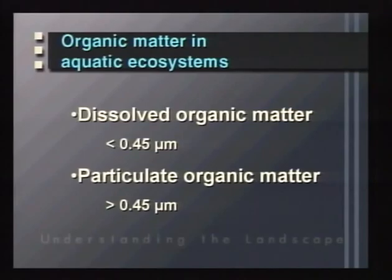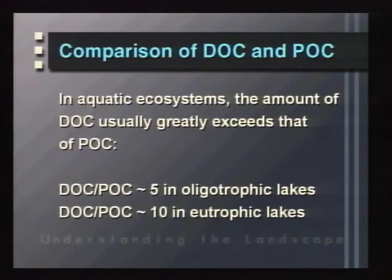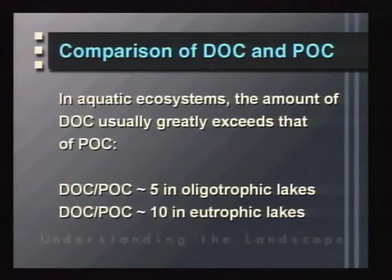Organic matter in an aquatic ecosystem can exist as either dissolved organic matter or particulate organic matter. Typically we have an operational definition of roughly half a micron: anything less than that we consider dissolved, anything larger is considered particulate. In aquatic ecosystems, the amount of DOC is usually much greater than the amount of particulate organic carbon. In oligotrophic or low-nutrient waters, the DOC to POC ratio is roughly five, but in more eutrophic systems, dissolved organic material is often ten times the amount of particulate organic carbon.